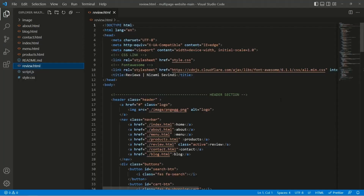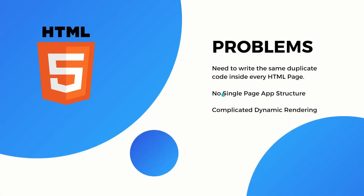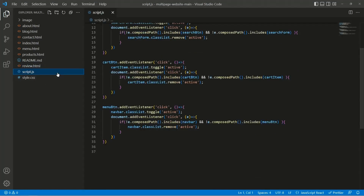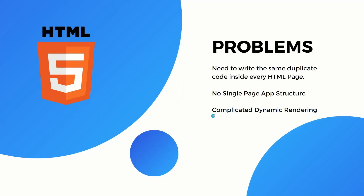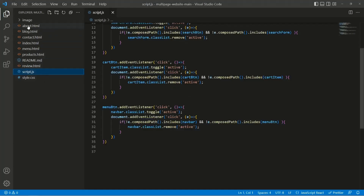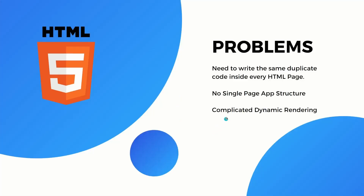The second problem is no single-page app structure. Inside every HTML page, when you navigate, the page always refreshes. React.js solves this with a dynamic approach where the page doesn't reload — you click and it moves to the next page without refreshing. The third problem is complicated dynamic rendering in HTML, where you need to attach script files and add JavaScript separately. In the modern development approach, we don't need that complexity.